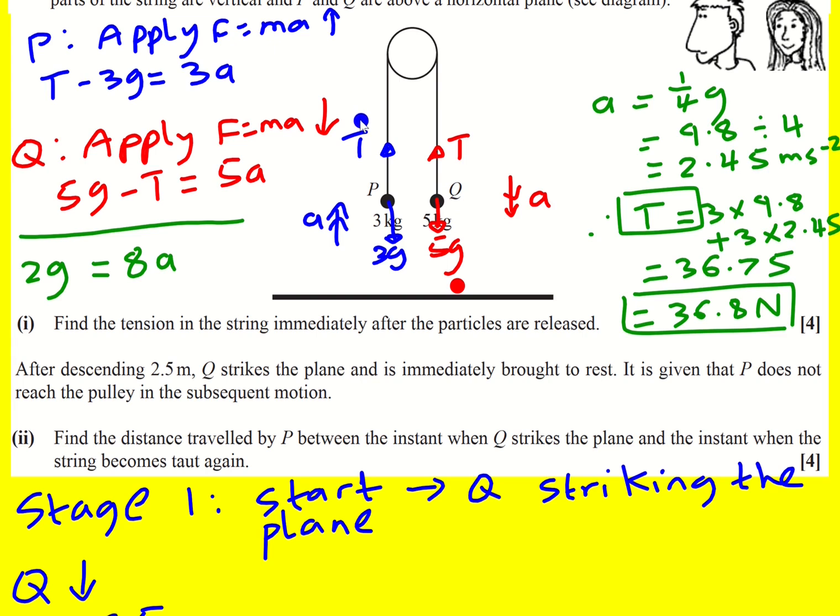And then it's going to be in the exact same place it was when Q hit the floor that the string is going to become taut again. Because that was the moment that it was taut and then it hits the ground, carries on, the string is kind of like loose at that point, comes back down, pulls it back down.